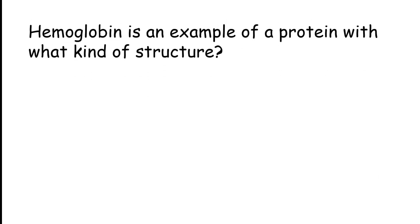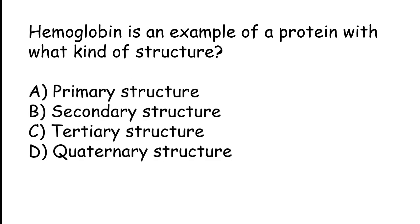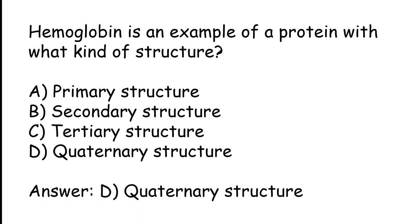Hemoglobin is an example of a protein with what kind of structure? Options: primary structure, secondary structure, tertiary structure, quaternary structure. The correct answer is option D: quaternary structure.